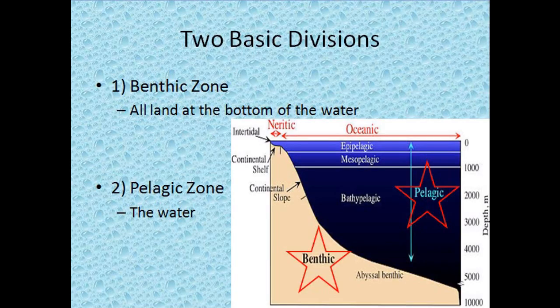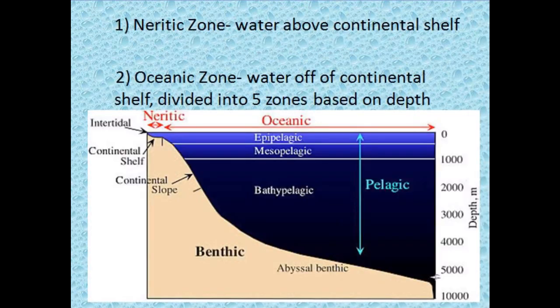That's all for benthic zones. Now into the pelagic zone. Two sections of the pelagic zone are the neuritic zone — the water above the continental shelf — and the oceanic zone, which is the water off of the continental shelf.